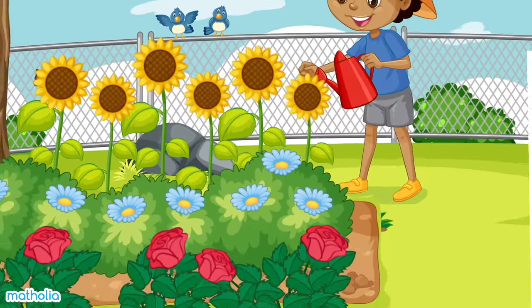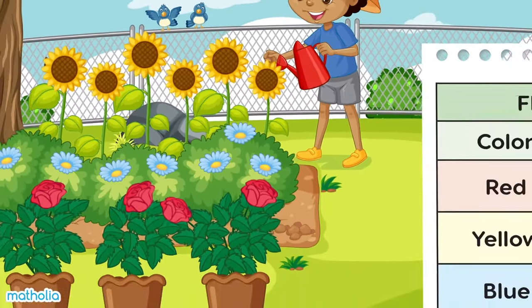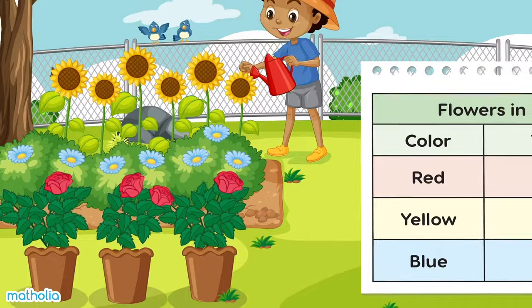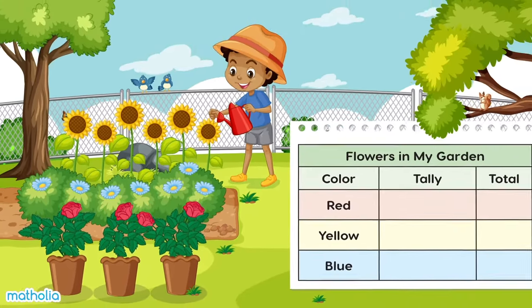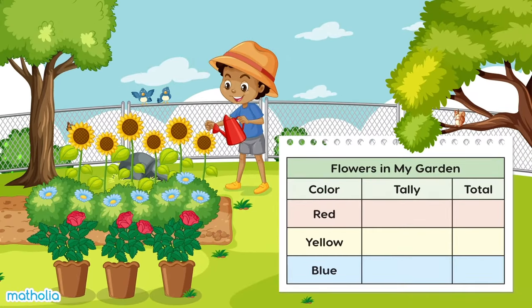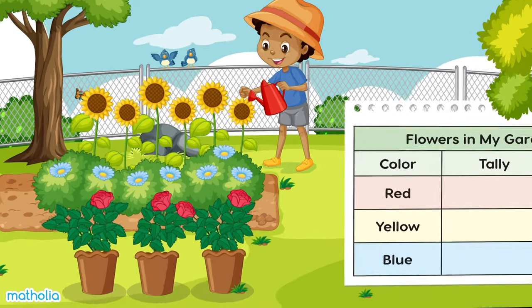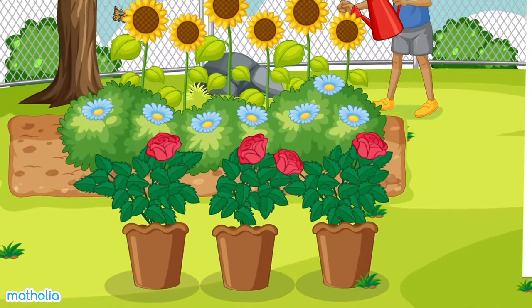Blake is watering the plants in his garden. He has plants with yellow flowers, blue flowers, and red flowers. Don't they look lovely? Let's make a tally chart to show the number of each flower colour. How many red flowers are there?